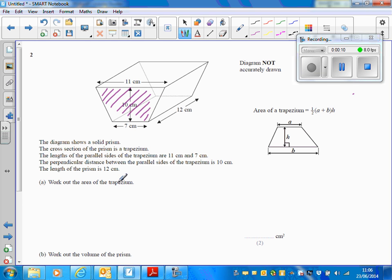Now the first part says work out the area of the trapezium. You're given the formula for the area of a trapezium in the front of the exam paper. So what we do is we add the parallel sides together, and then multiply by the height and divide by 2.